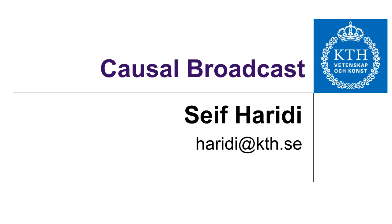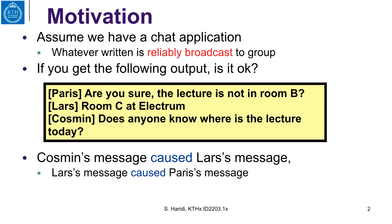We now move to impose order on the delivery of messages from various broadcasts. We do this by looking at causal order broadcast. Here is a motivating example: assume we have a chat application where a group of individuals can build groups, and the idea is that whatever is written in a chat room is reliably broadcast to the group.